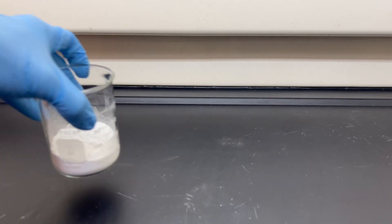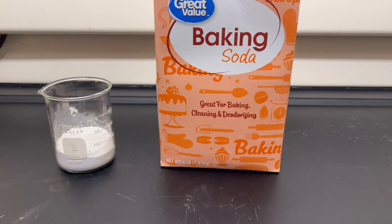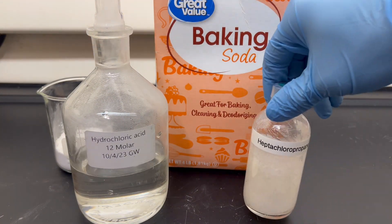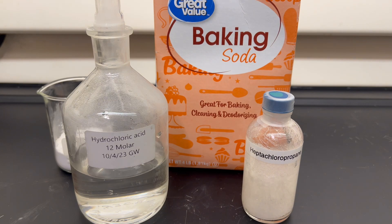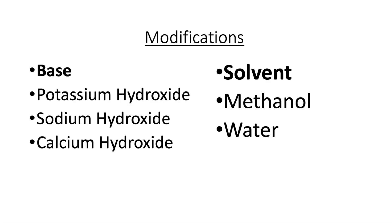The chemicals needed for this reaction are calcium hydroxide, hydrochloric acid, sodium bicarbonate, and the previously produced heptachloropropane. A few variations can be made between solvent and base, such as sodium hydroxide instead of calcium hydroxide, or water and methanol as a solvent.